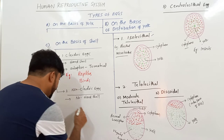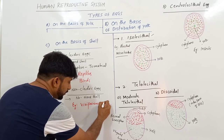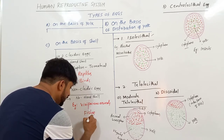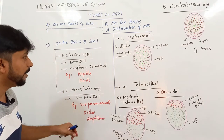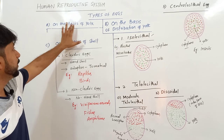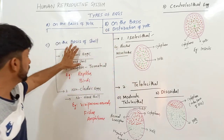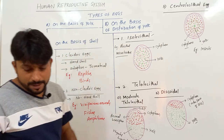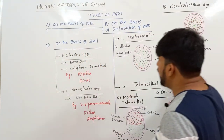So, for Non-cleidoic eggs, you can take the example of eggs produced by viviparous animals, and also the eggs of fishes and amphibians, because in fishes and amphibians the eggs are laid in water, not on land. In summary: eggs are classified based on amount of yolk, distribution of yolk, and shell presence and absence. There are also membranes surrounding the egg — primary, secondary, and tertiary egg membranes.